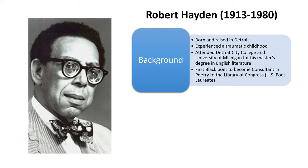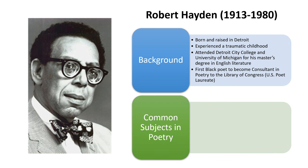He was the first Black poet to become the Consultant in Poetry to the Library of Congress, a role which is now known as the U.S. Poet Laureate. Hayden's poems cover various topics, including historical figures such as Harriet Tubman, Frederick Douglass, Nat Turner, and John Brown. Some of the titles of his poems are actually the names of these individuals.